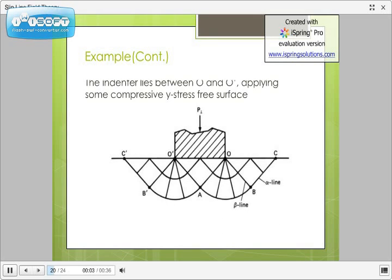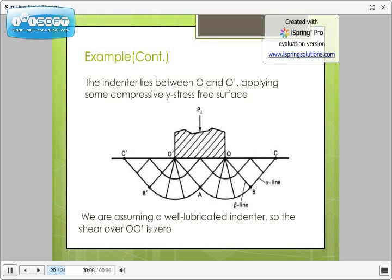Here, indenter is in between O, O dash. Now, we are assuming a well-lubricated indenter, so the shear over O, O dash is zero. Now, in the free surface OC, from the boundary conditions described before, sigma y equals sigma 1 equals zero, sigma 2 equals minus k, and sigma 3 equals minus 2k. Here, sigma 2 equals hydrostatic pressure. We can also draw Mohr circles of stress for a point on this free surface.